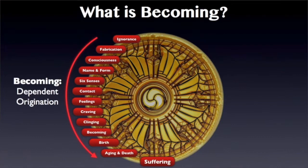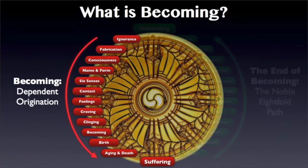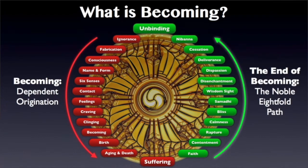Once someone bottoms out in suffering, the next stage is for them to take up the Eightfold Path — the end of Becoming. And we're going to get to that after we go through mastering the process of Becoming, because the Eightfold Path is also a process of Becoming. It's just one that leads to enlightenment, nirvana, and unbinding — the end of suffering.